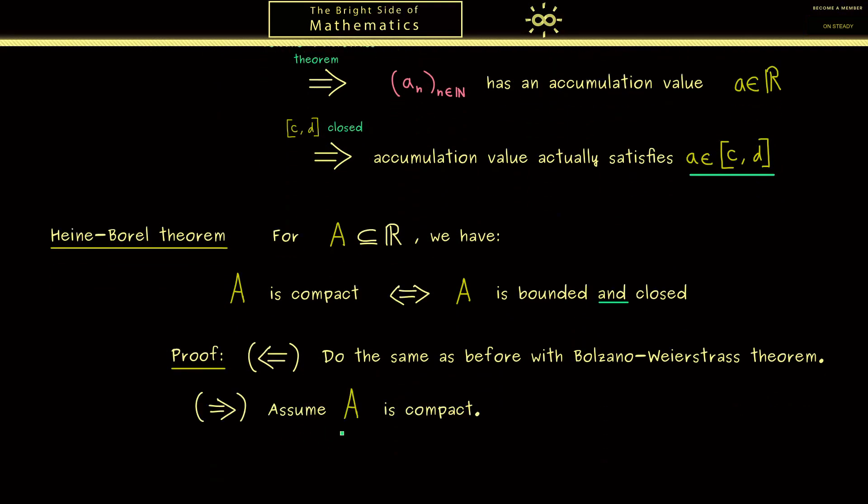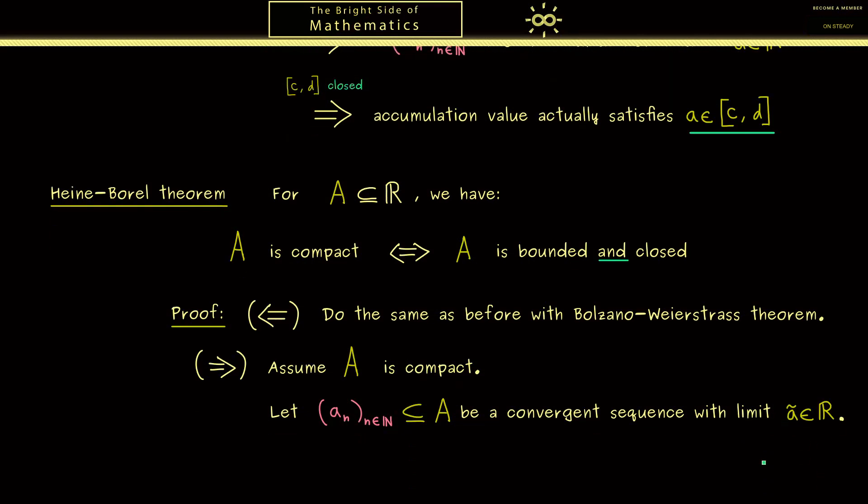Hence we assume that our set A is compact. Now for showing the closeness we take any convergent sequence in the set A. And let's call the limit for the moment Ã. First we only know that the limit is a real number. If we can show that it is also an element in A we have shown that the set is closed.